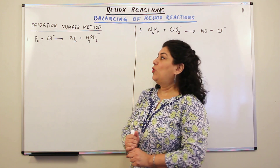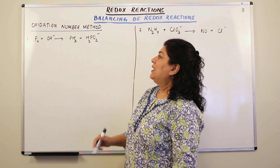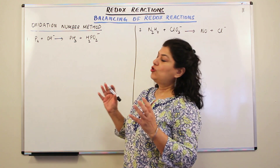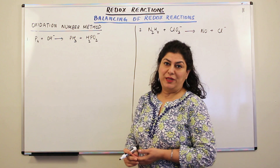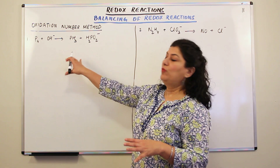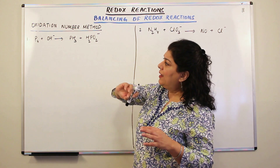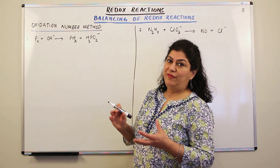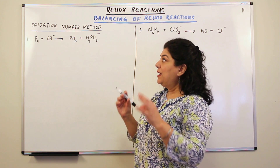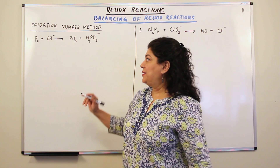The question she asked was: P4 plus OH negative gives you PH3 plus H2PO2 negative, and you're supposed to balance it by the oxidation number method. Remembering the five steps — the first step is to write down all the formulae correctly, which is already given to us. Now in the second step we find out the substance that got oxidized and reduced by assigning the oxidation numbers to all the species present.